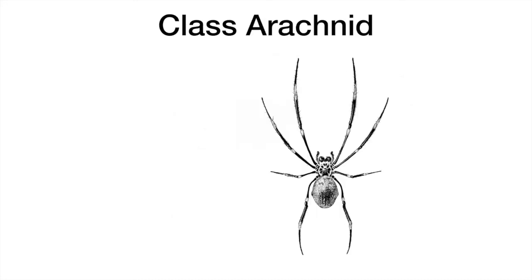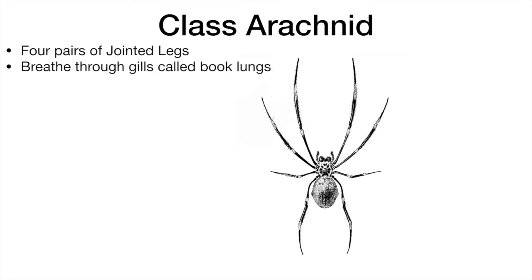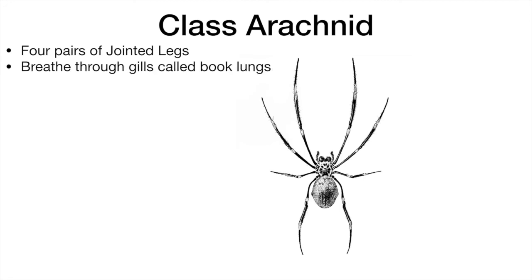Arachnids — such as spiders and scorpions — all have four pairs of jointed legs and breathe through structures called book lungs. Myriapods have a body consisting of many segments, each of which contains a pair of jointed legs.